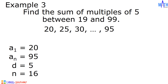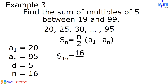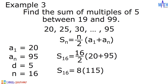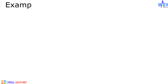After solving for n, let us find the sum. Using the formula and substituting all the given values, we have S sub 16 equals 16 divided by 2 times the quantity 20 plus 95. Simplifying: 16 divided by 2 equals 8, and 20 plus 95 equals 115. So 8 times 115 equals 920. And that is the sum of multiples of 5 between 19 and 99.